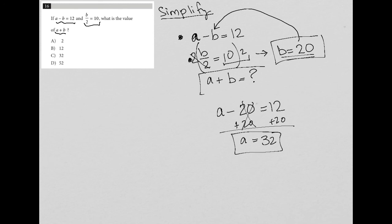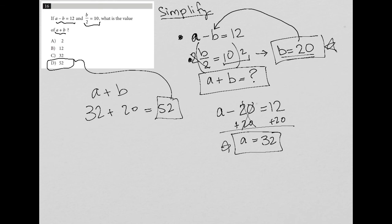Well, the question just wants me to figure out what is A plus B. So A plus B would be 32, because A is equal to 32, plus 20, because B is equal to 20. And 32 plus 20 is equal to 52. Therefore, the correct answer here is choice D. Thank you.